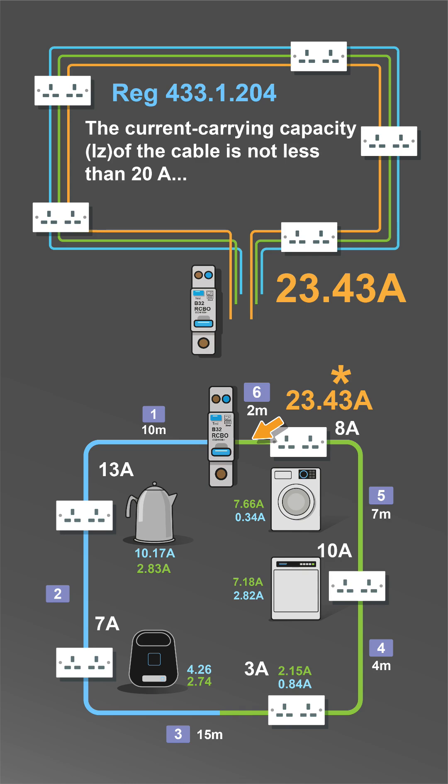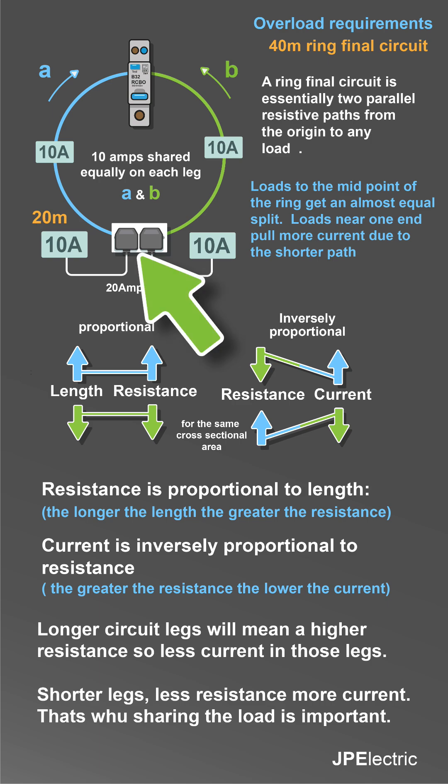A ring final is essentially two parallel resistive paths from the origin to any load. Loads to the midpoint of the ring get an almost equal split. Loads to near one end pull more current due to the shorter path.